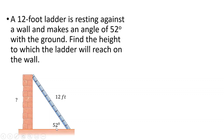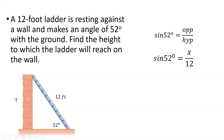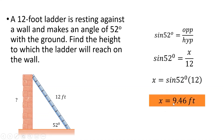Since this is 52 degrees, using the trigonometric function, the unknown is opposite the 52-degree angle and the known value is the hypotenuse, which is 12 feet. So we use sine: sine equals opposite over hypotenuse. Let x be the opposite side and the hypotenuse is 12, so sine 52° = x/12. Cross-multiplying: x = sine 52° × 12 = 9.46 feet. The height the ladder reaches on the wall is 9.46 feet.